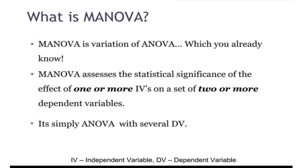So let's see what is MANOVA. MANOVA is Multivariate Analysis of Variants — it is a variation of ANOVA. MANOVA assesses the statistical significance of the effect of one or more independent variables on two or more dependent variables. So it is going to see the effect of one or more independent variables with two or more dependent variables.